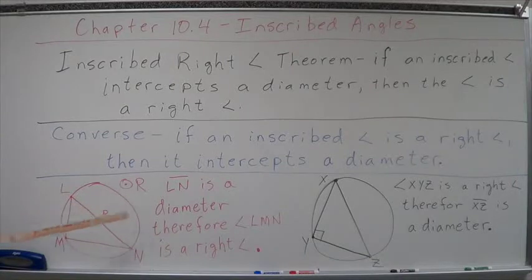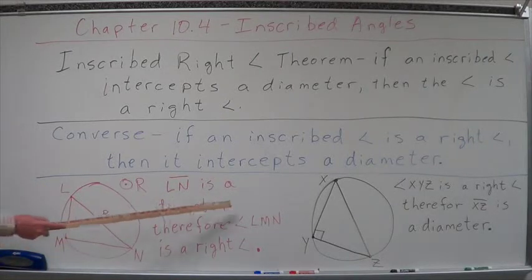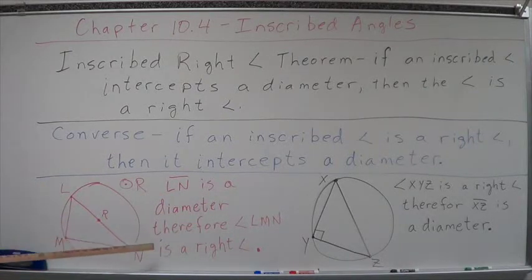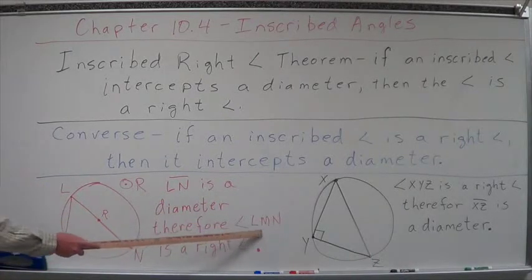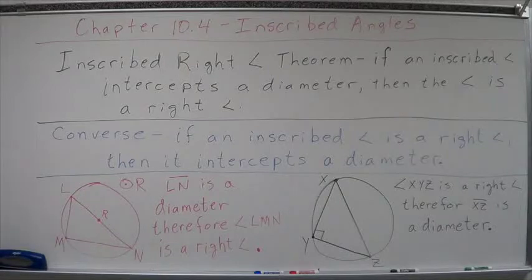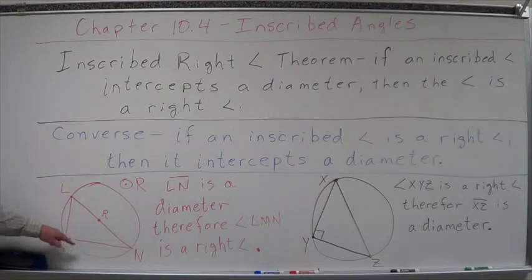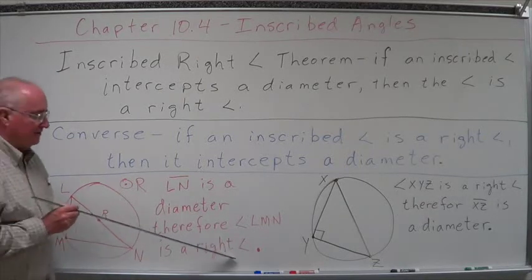Here's an example of that. We have circle R. I have angle L, M, N. I'm given that LN is a diameter. Therefore, angle LMN is a right angle — it has to be. That's just what I'm given: LN is a diameter, therefore angle LMN is a right angle.